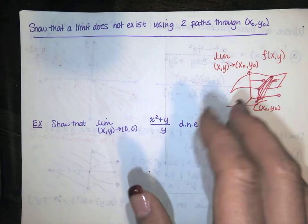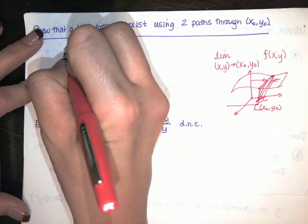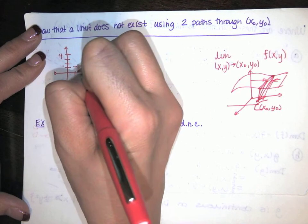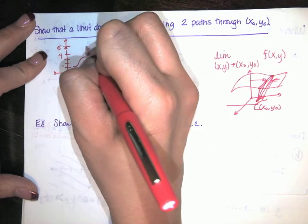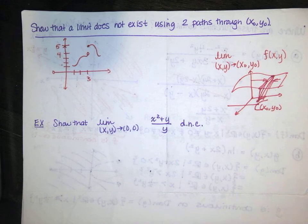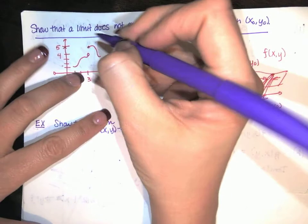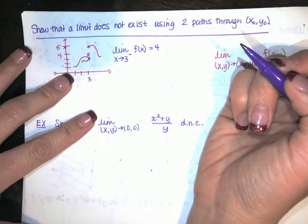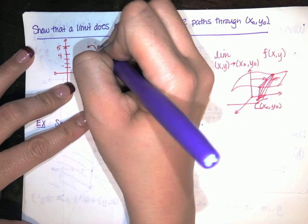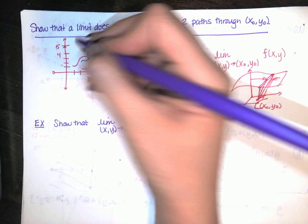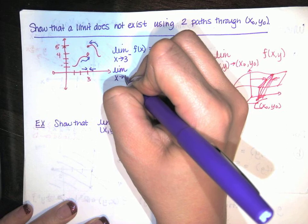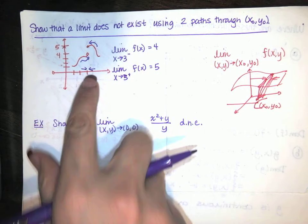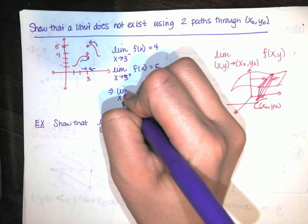It's hard to draw in 3D, but it was easy to think about back in Calculus 1. Back in Calc 1, we would look at a graph as x approaches 3. Maybe from one side the y values approach 4, but then on the other side the y values approach 5. We said that this limit didn't exist. The limit as x approaches 3 from the left of f of x is 4, and from the right the y values are approaching 5. Since we got two different limits coming from two different directions, this limit as x approaches 3 doesn't exist.